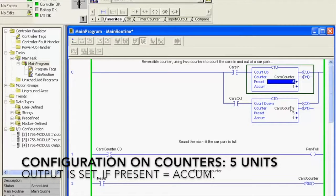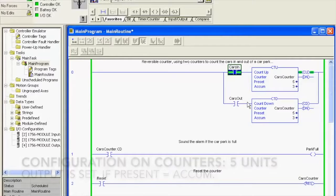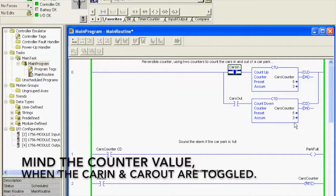You'll see they both change because they're the same address. Here we'll toggle the cars in bit, and you'll notice that it's counting. You'll see the accumulator in both counters is going to whatever the value is at the moment, which is 3. We'll toggle the cars out and down she counts. Pretty straightforward, easy to use, and a nice tool for something like this car park example.